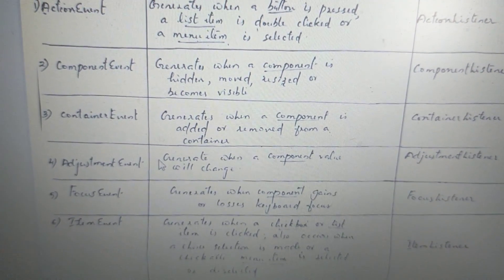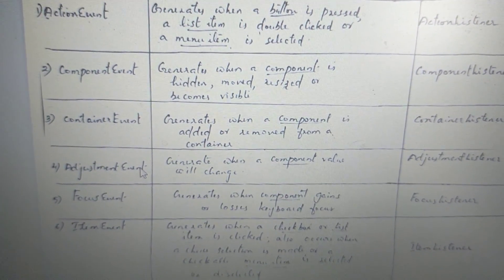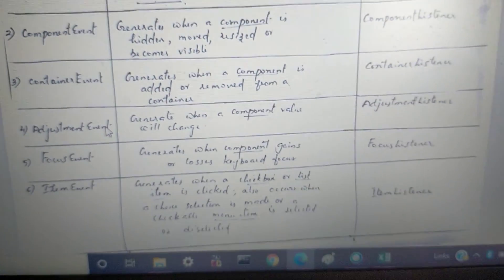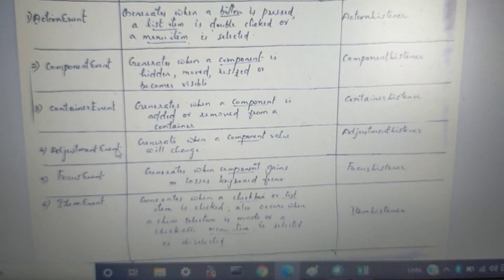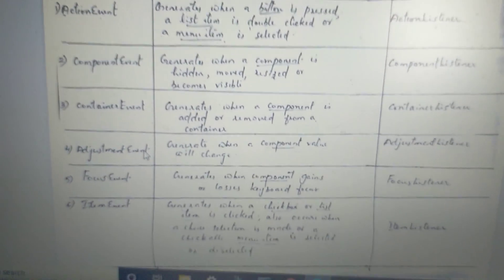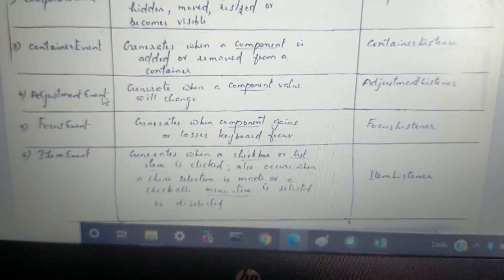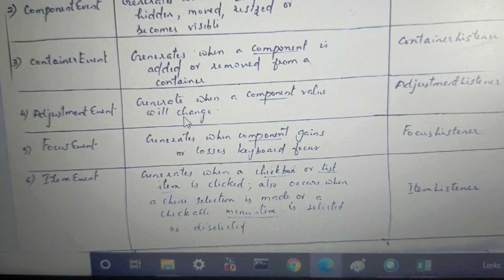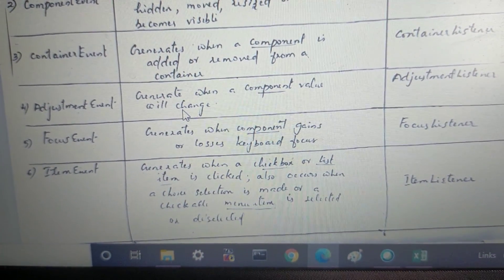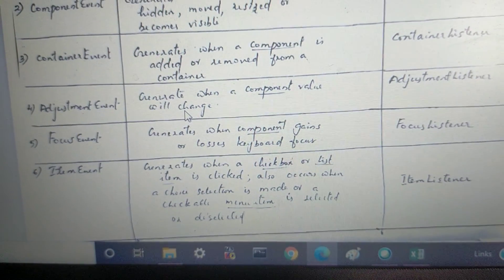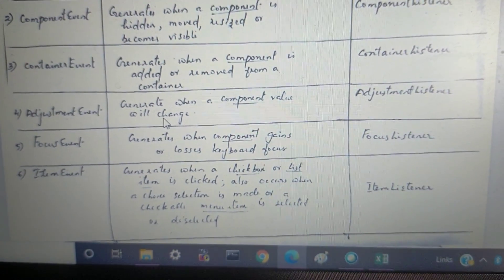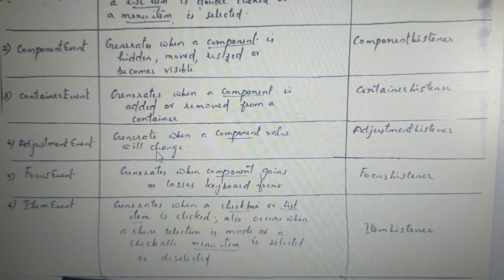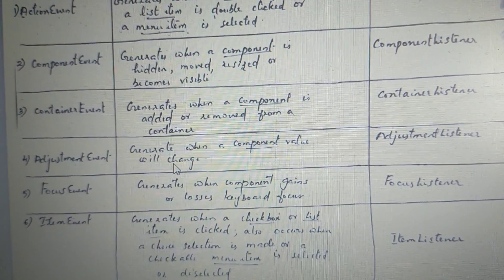Next, adjustment event: we will change the value of the component, such as changing the length and size. The corresponding listener is the adjustment listener. Next, focus event: when you select any other component, it generates a focus event — focus will gain or lose keyboard focus. The corresponding listener is the focus listener.